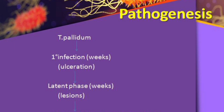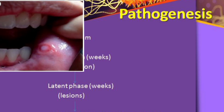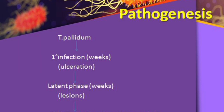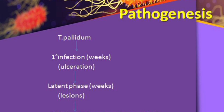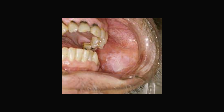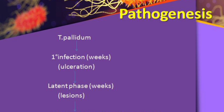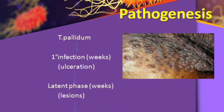Moving on to pathogenesis: Treponema pallidum bacteria enters a person and causes a primary infection lasting a few weeks, with ulceration and wound-like appearance. Then you enter a latent phase with more lesions around the body — inside the oral cavity, in the armpit, or on the chest. Secondary infection begins in three to four months, with patch formation in the mucous region, rashes, and condylomata.